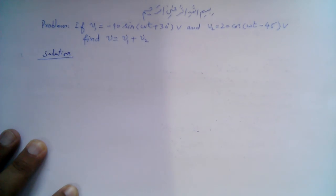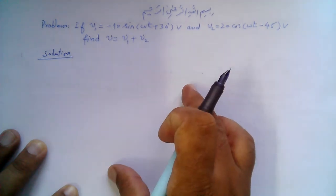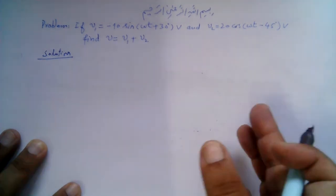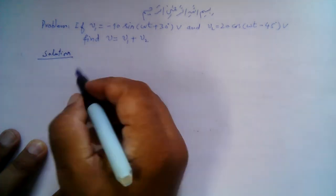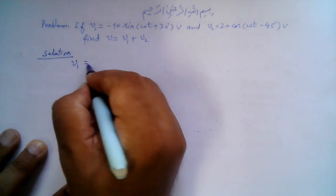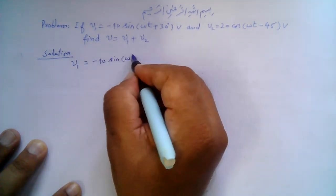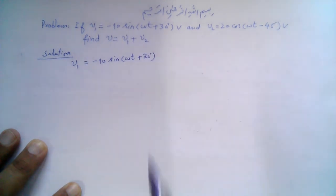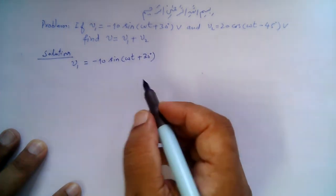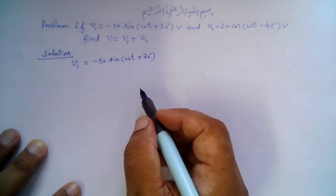The easier method will be to first transform these sinusoids into the phasor domain, then add them there, and then convert the result back to the time domain. So v1 is equal to minus 10 sin(ωt + 30°). We must first transform into the standard sinusoidal function so that we can find the phasor.